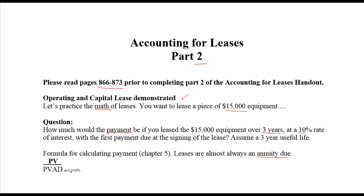If you recall from Chapter 5, if you know the present value of $15,000, all you need to do is divide it by a present value interest factor from a present value annuity due chart with n=3 and i=10%. Or using your calculator, you can enter $15,000 as a present value, 3 as the number of years, 10 as the interest rate, and solve for the payment amount.